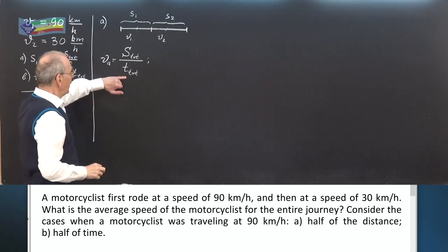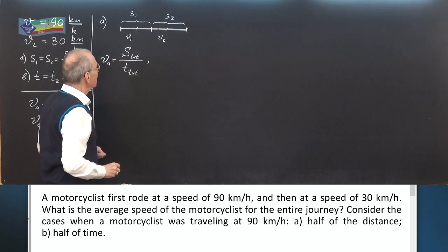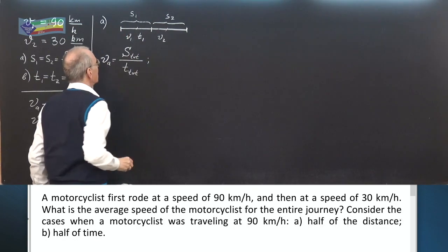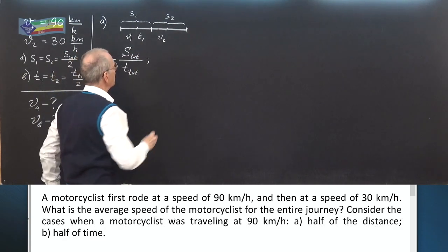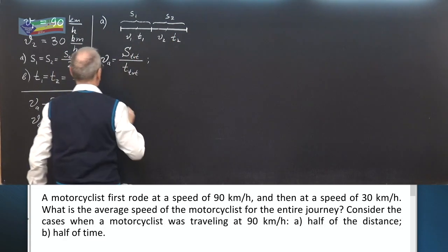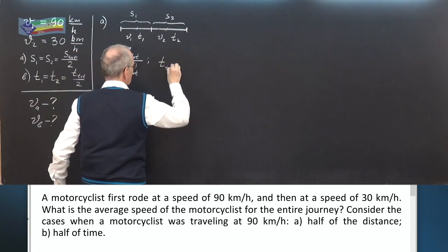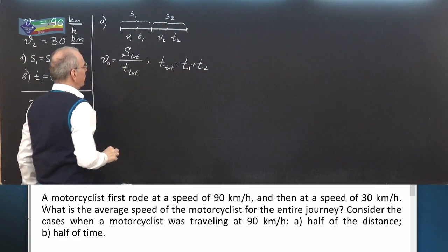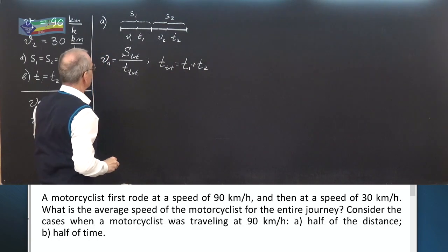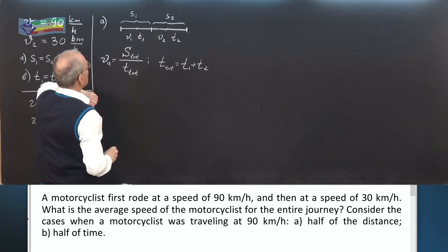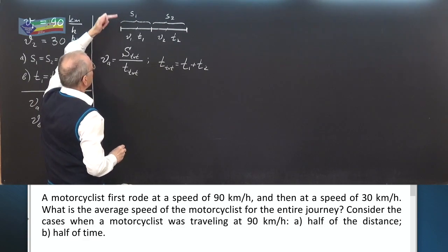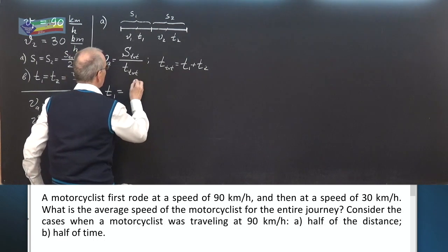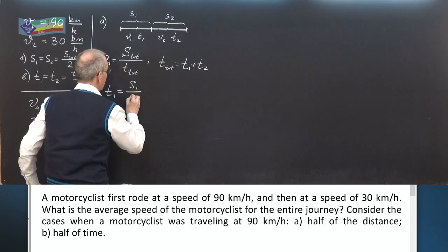Let us find the total time. Total time is the sum of times taken by the cyclist for riding the first part and the second part: T_total equals T1 plus T2. To find T1, we divide S1 by V1: T1 equals S1 over V1.